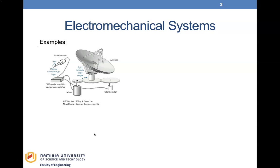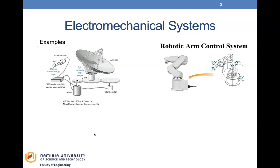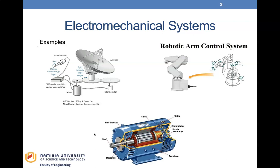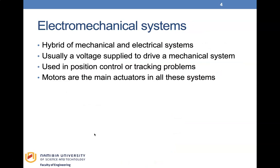Electromechanical systems are in our everyday life — an antenna is an electromechanical system, a robot arm control system is an electromechanical system, and we have motors. Electromechanical systems are a hybrid of mechanical and electrical systems, where a voltage is supplied to drive a mechanical system. They are used in position control or tracking problems, and motors are the main actuators in all these systems.